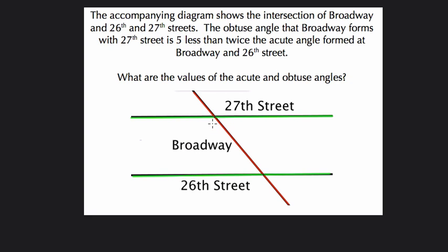here, it's obtuse, or the vertical angle here. They're both obtuse, they're both the same angle. They're telling us that that angle is 5 less than twice the acute angle, this angle here or here, that's formed at 26th Street and Broadway.